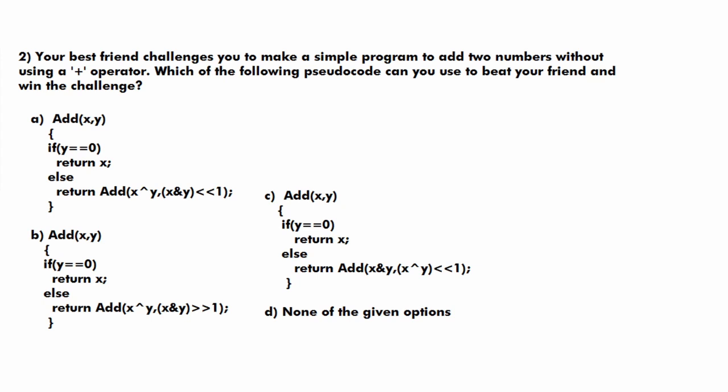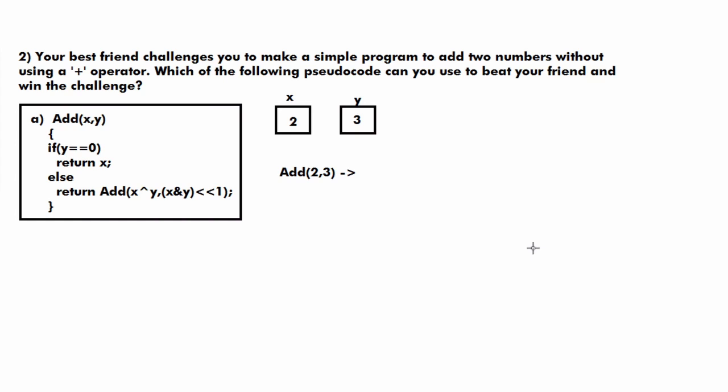We'll take the first function and execute it for inputs x equals 2 and y equals 3, so the function call is add(2, 3) and we expect output 5. The first condition checks if y equals 0; if so it returns x, otherwise the function is called recursively. Since y is 3, not 0, we go to the else part, which calculates new values using XOR, AND, and a left shift operator.